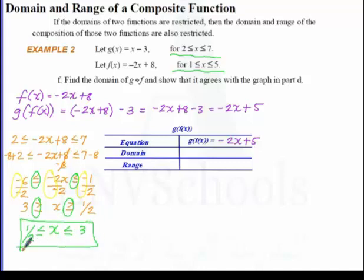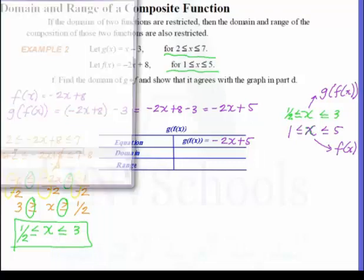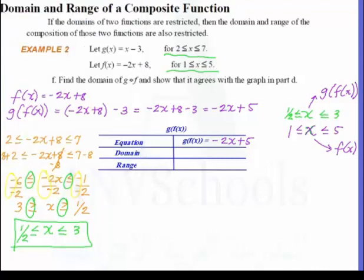So that's our new domain interval. Now let's see if x between one-half and 3 coincides with the domain restriction for f of x, which is from 1 to 5. We place this on a real number line to find the intersection of these two domain restrictions.